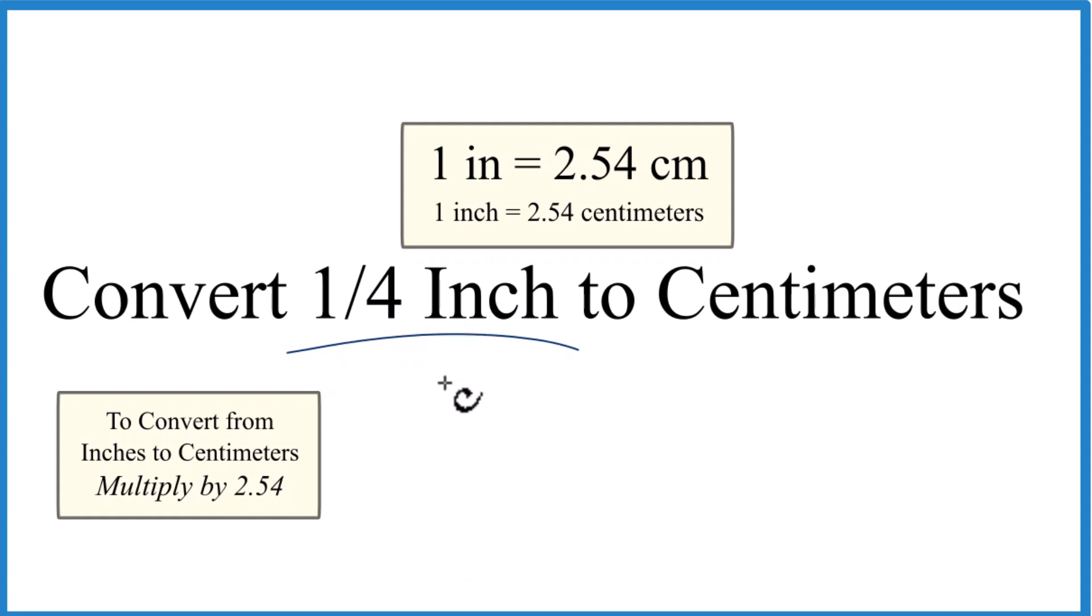So we take one-fourth, probably easier to change this to a decimal, let's call it 0.25. Just divide one by four on your calculator or by hand, you get 0.25 and that is inches. We're going to multiply that by 2.54.